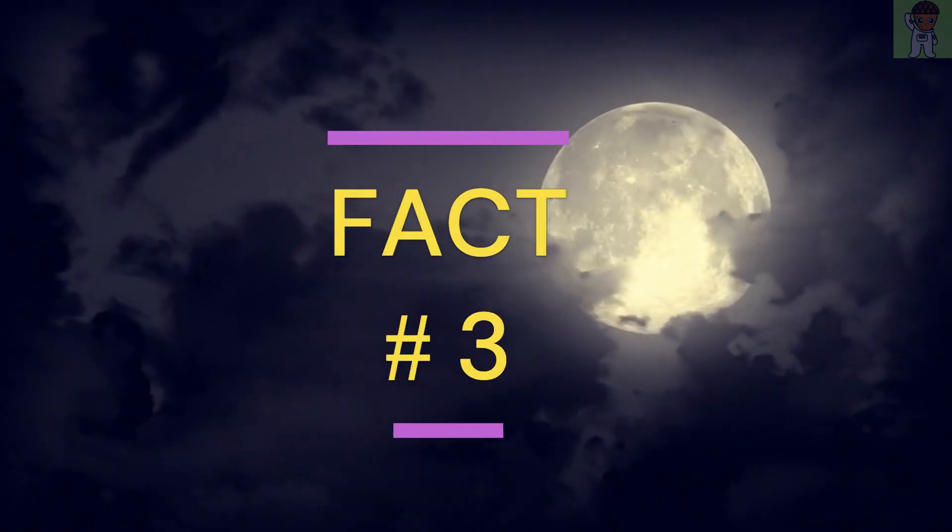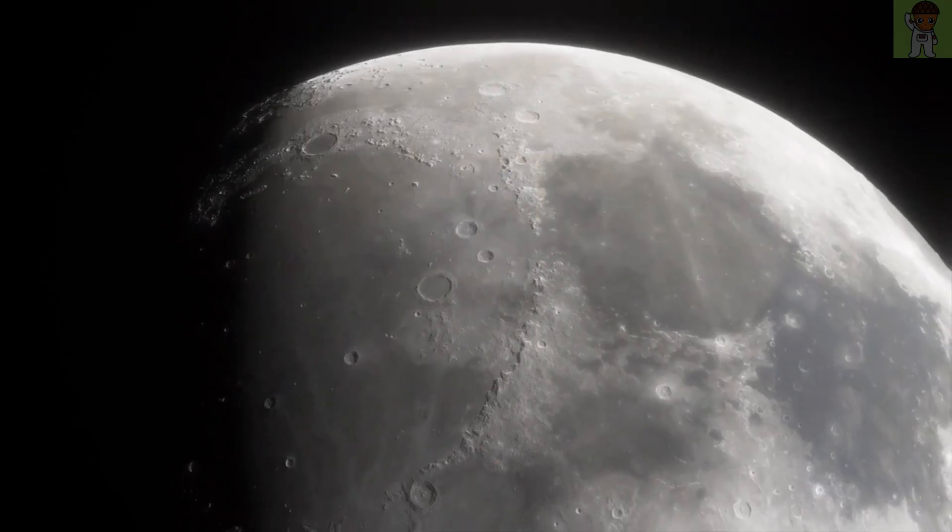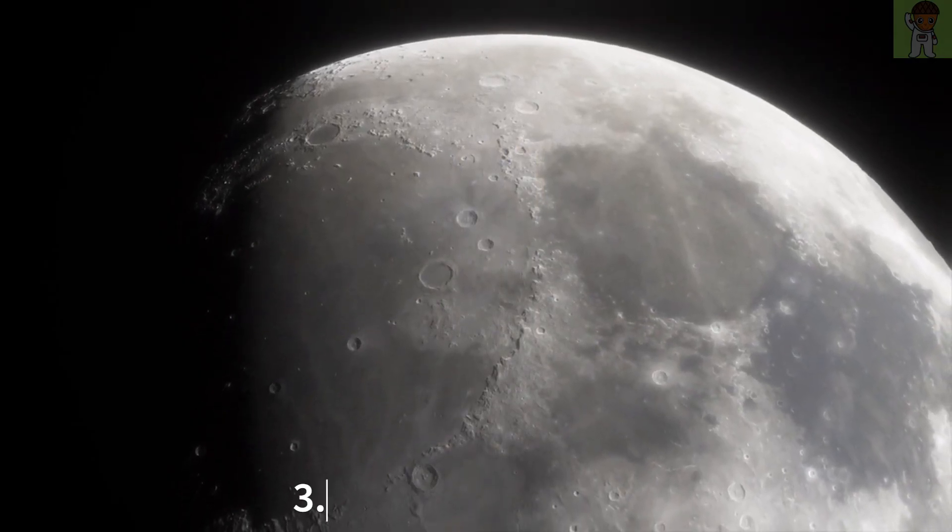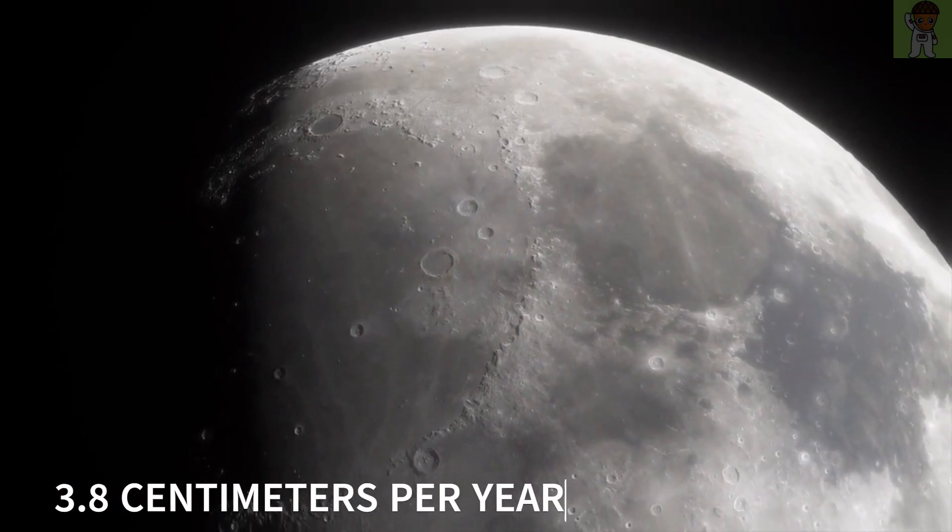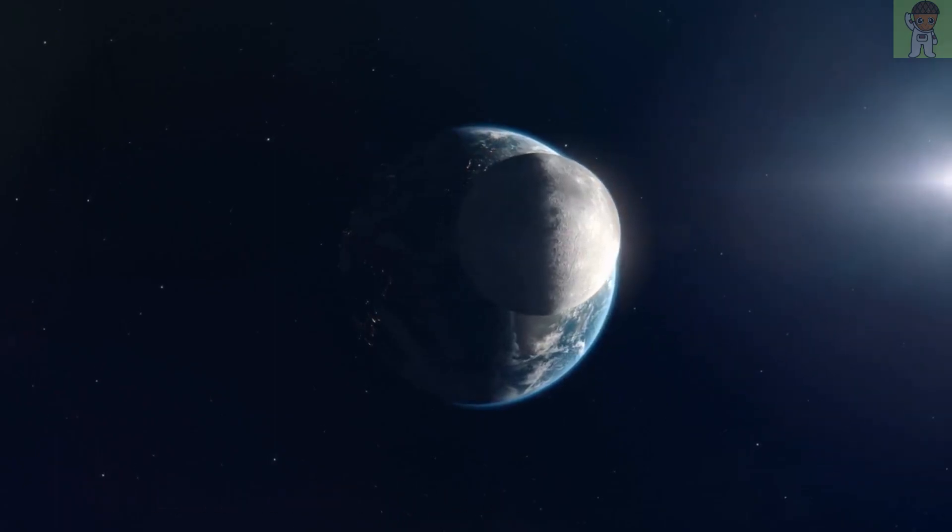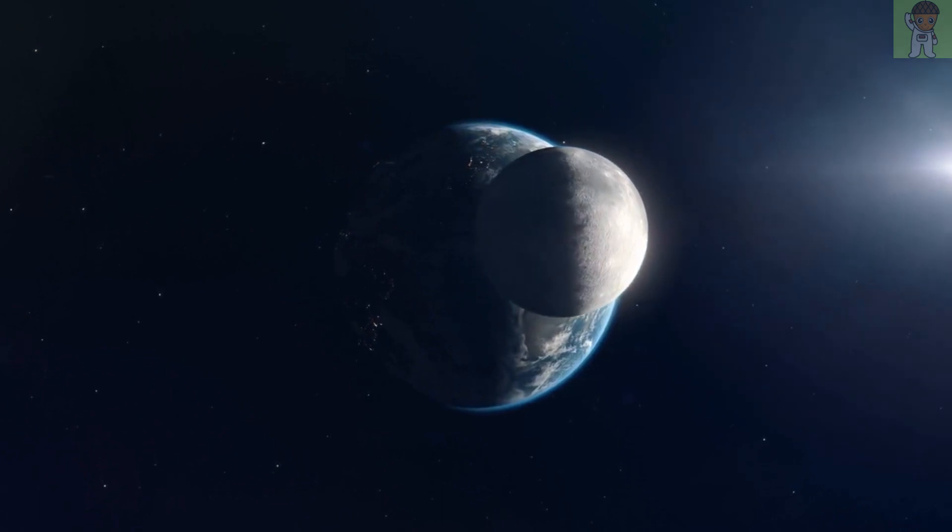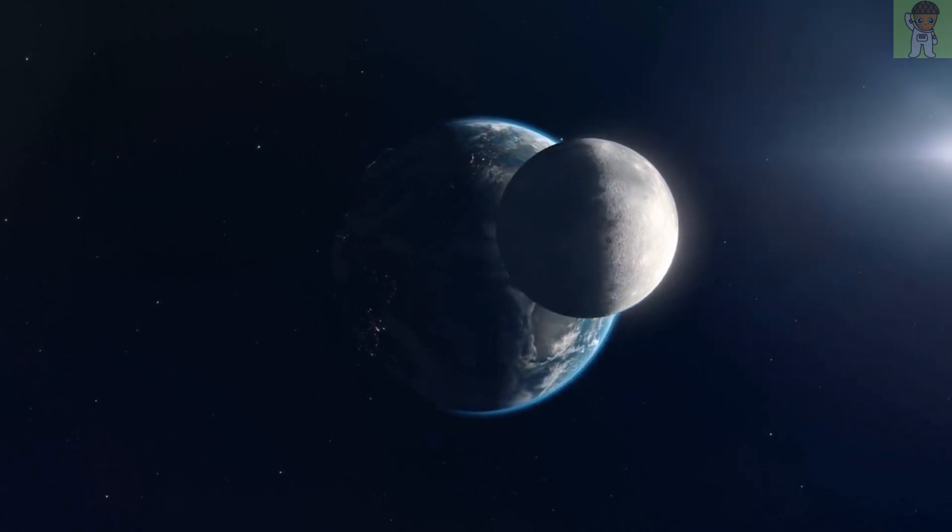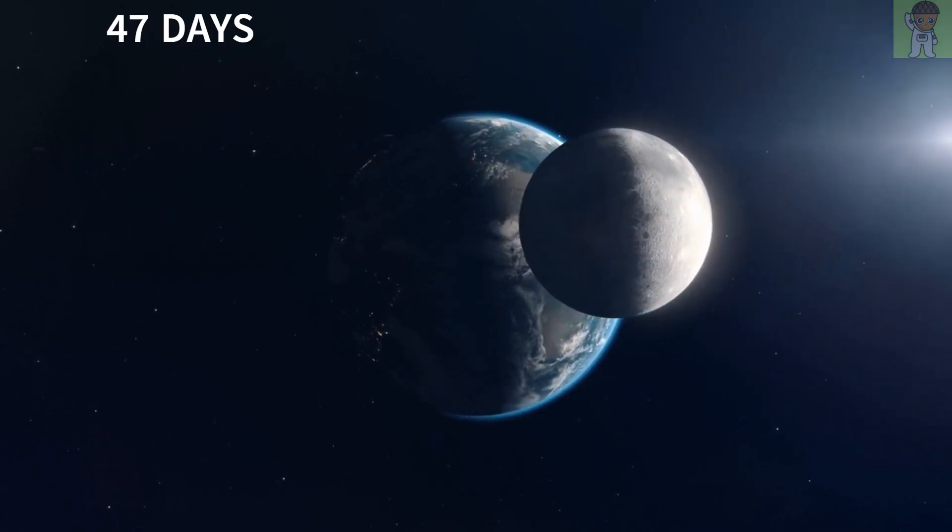Fact number 3. The Moon is actually moving away from Earth at a rate of about 3.8 centimeters per year. This means that in about 50 billion years, the Moon will have drifted so far away from Earth that it will take over 47 days to orbit our planet.